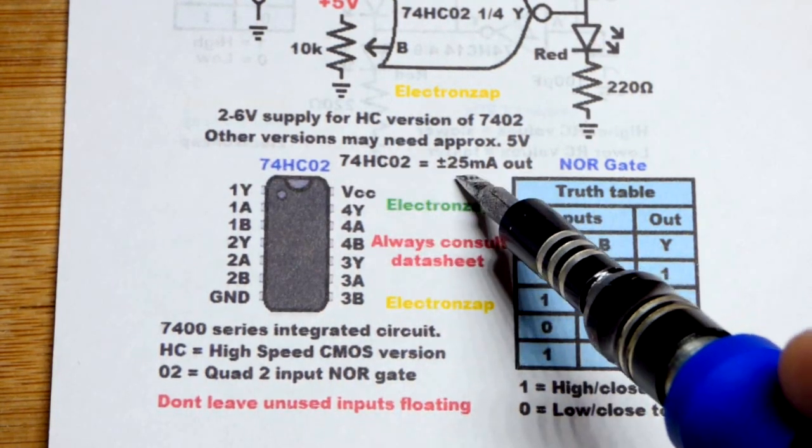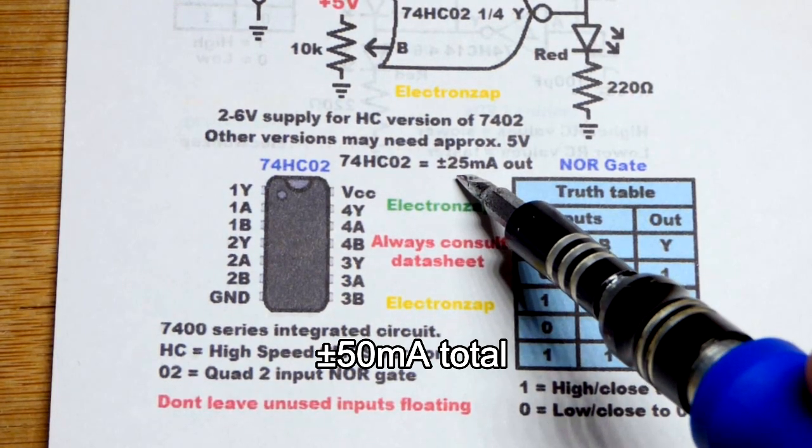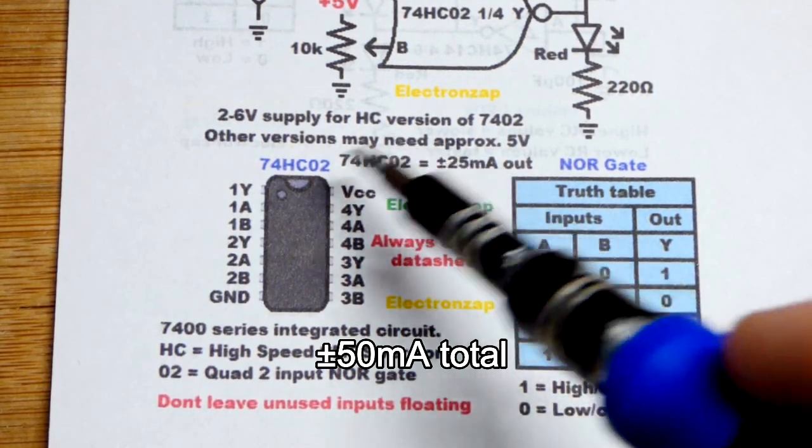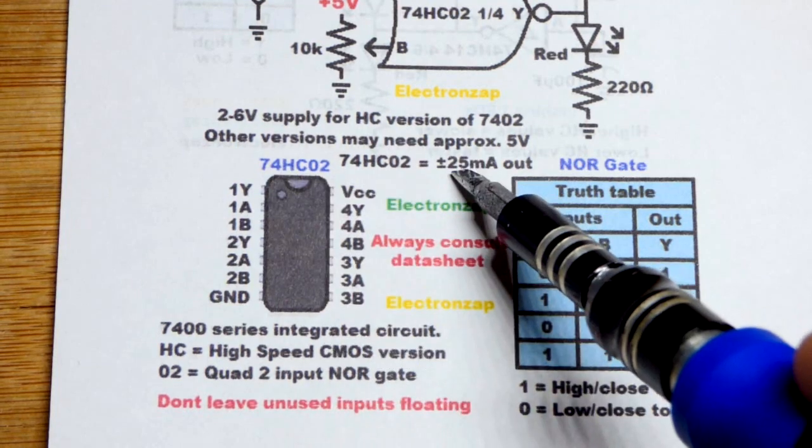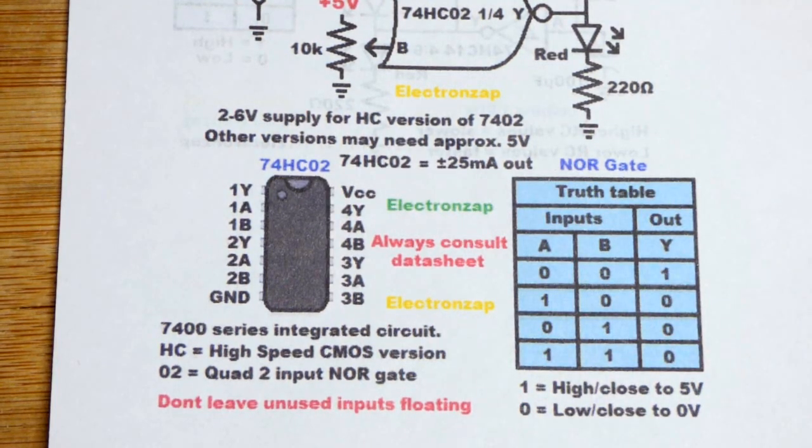And for the high-speed CMOS version, again, we can sink or source 25 milliamps of current. So that's quite a bit of current for a lot of these 7400 series integrated circuits, and so it's a pretty nice circuit to work with.